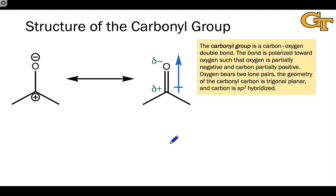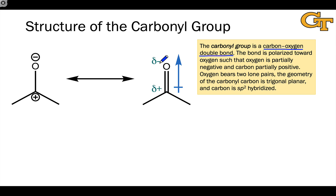Let's dive right in with the structure and nomenclature of carbonyl compounds. The carbonyl group is a carbon-oxygen double bond — really as simple as that. This bond is polarized toward oxygen because oxygen is more electronegative than carbon, so we see partial negative charge on the oxygen and partial positive charge on the carbon. The oxygen atom bears two non-bonding lone pairs.